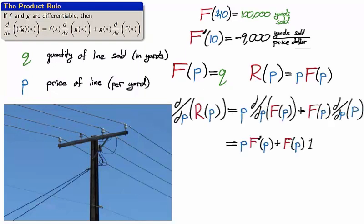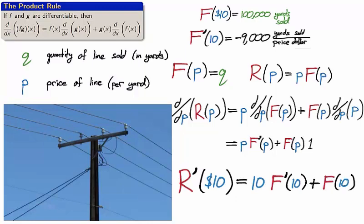The manufacturer can then use the product rule to estimate the immediate loss in revenue due to a price change. Take the derivative with respect to price p of the revenue r using the product rule. r prime equals p times the derivative of f plus the derivative of p times f. So r prime of 10, the instantaneous rate of change in revenue, is positive $10,000 in revenue per dollar in price. If the price is raised by a single cent, then it is estimated that there will be a decrease of 90 yards sold and an estimated revenue increase of $100.